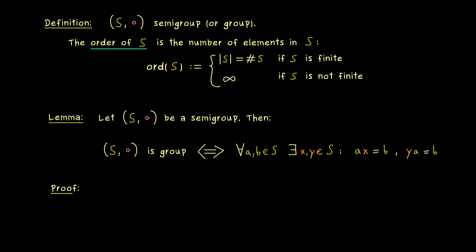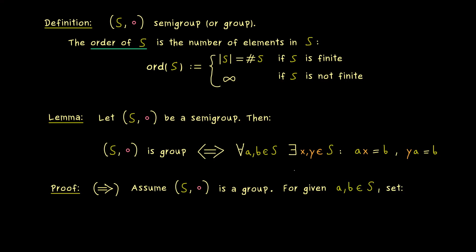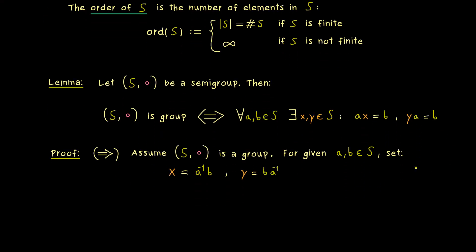Since this is an equivalence, we have to prove two implications. Let's start with the easy one, going from left to right. We already assume that S is a group, and then for given a and b we simply ask what x and y are. Since we already have inverses, x is simply a-inverse times b — this is a well-defined element and satisfies the first equation. Similarly, y is b times a-inverse, which also satisfies the second equation. So we are done with this direction.